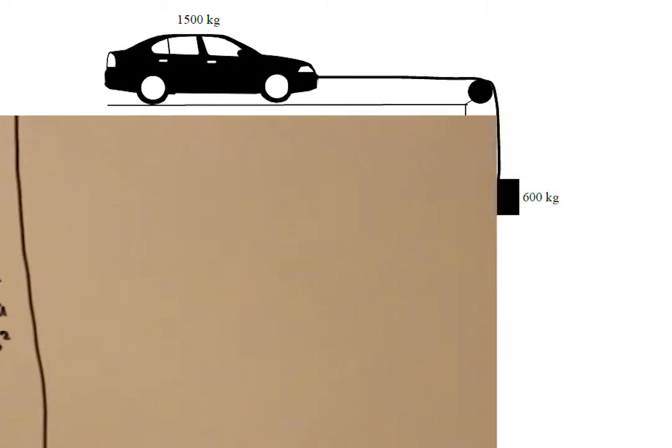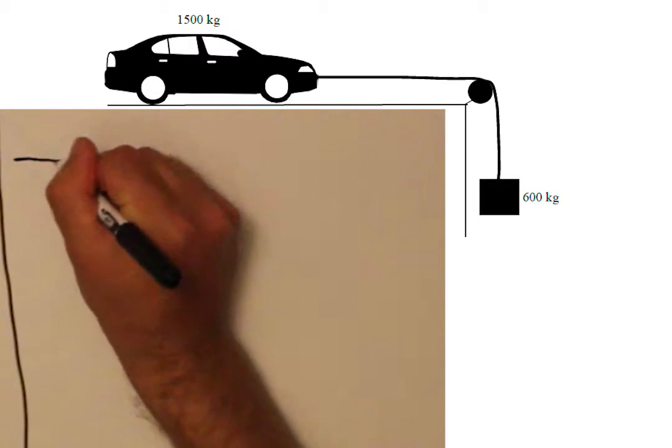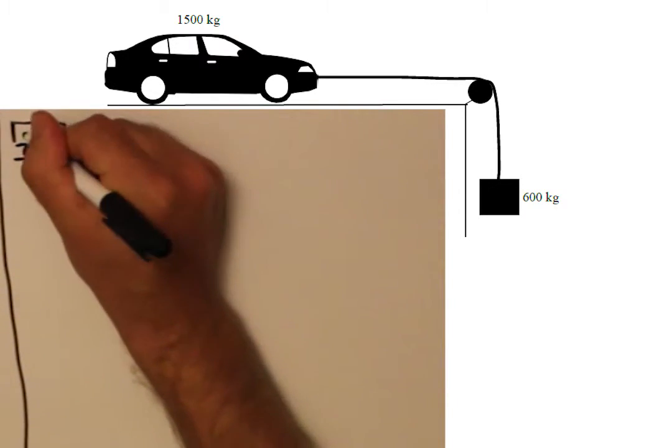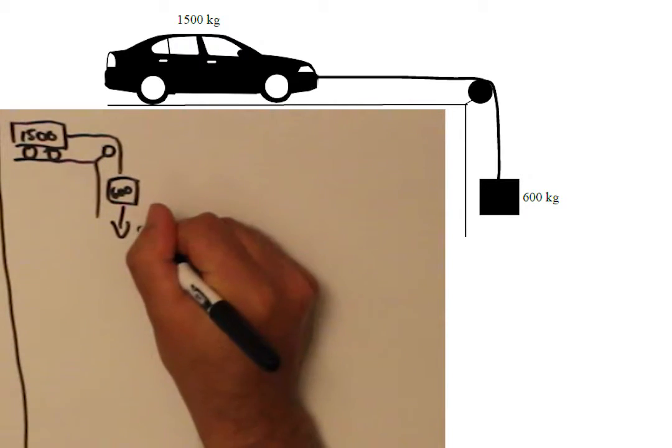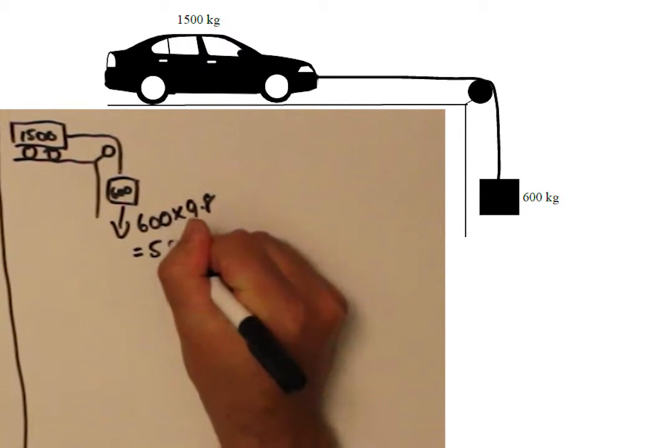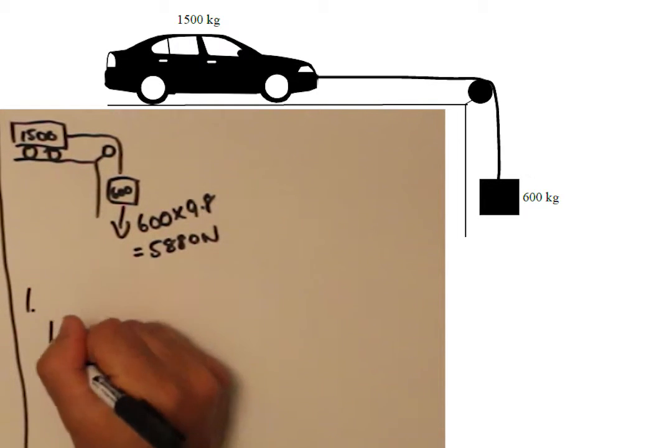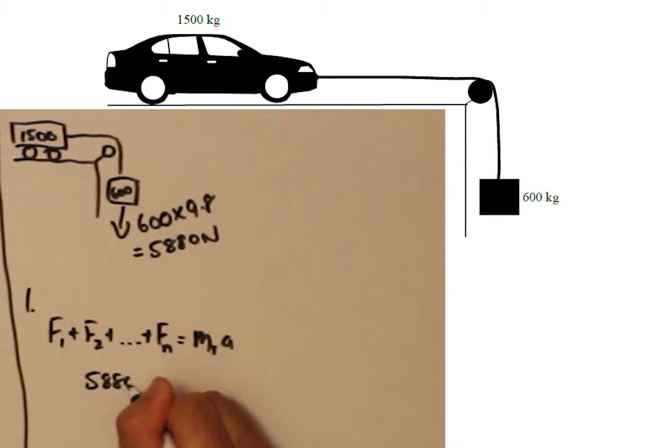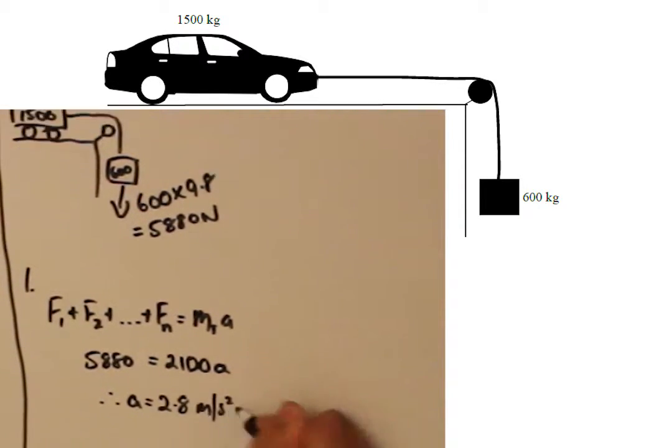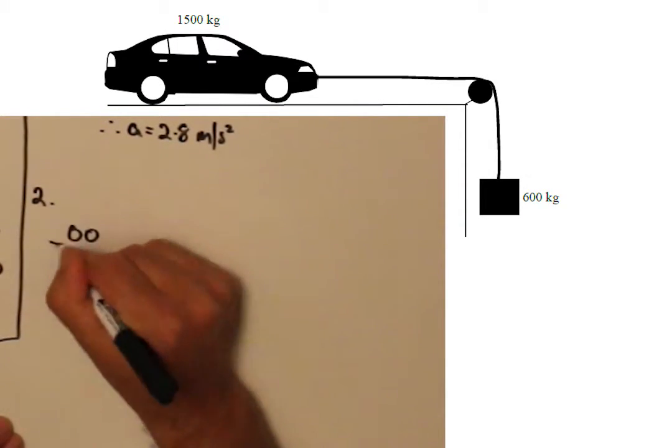In question number three, we have a weight force of the 600kg object driving the system. 5,880N equals the combined mass times the acceleration, which means A equals 2.8m per second squared.